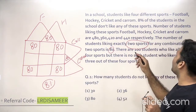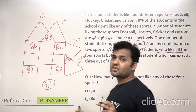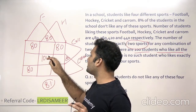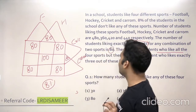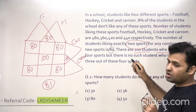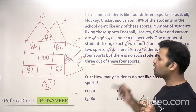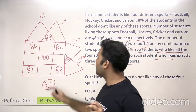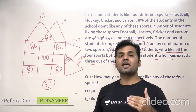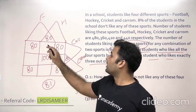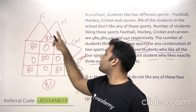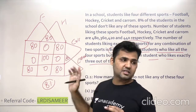There are 100 students who like all four sports. That corresponds to the middle cell, which represents the intersection of all four sets — so this value is 100. Also, the question states there are no students who like exactly three out of these four sports. Those regions representing three-set intersections are all zero. So what we are left with are the values for only football, only hockey, only cricket, and only carom.